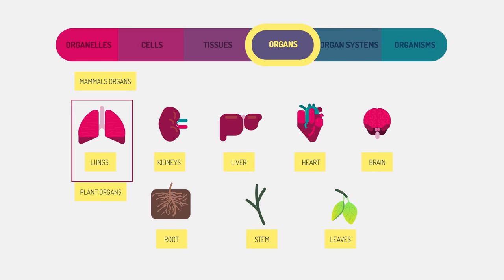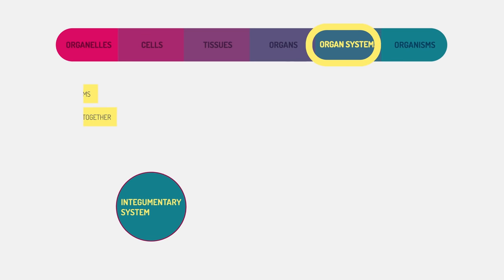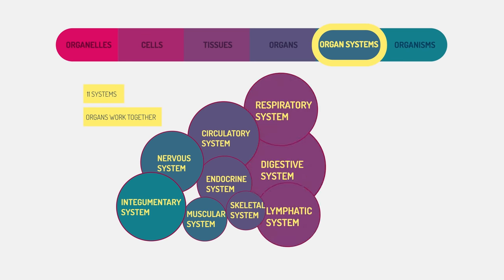These are the lungs, kidneys, liver, heart, and brain. But plants have organs too. These specialized organs work together in organ systems, performing body functions.